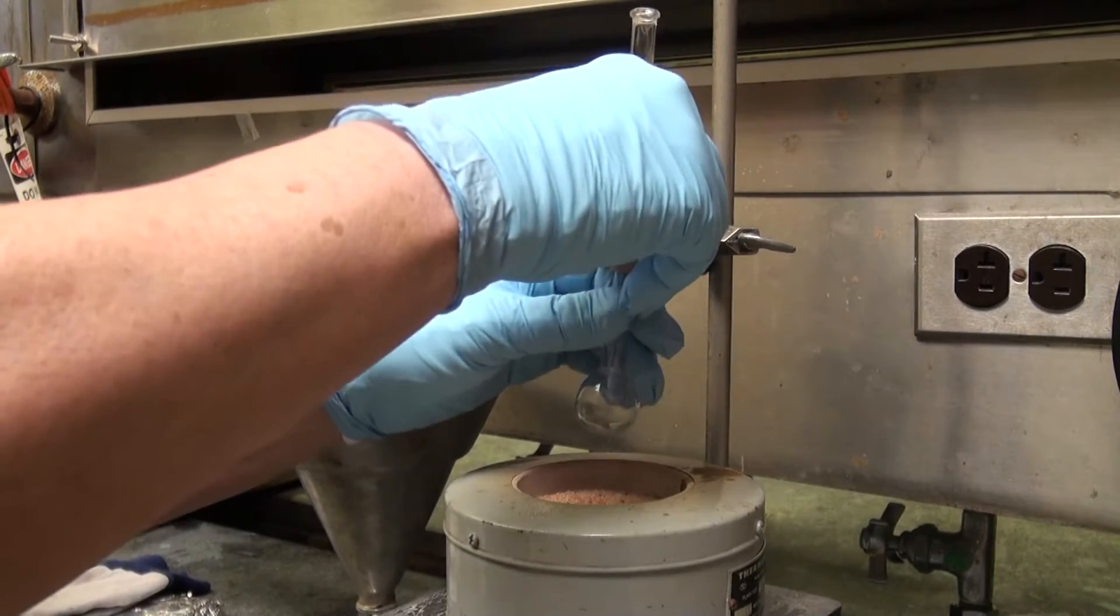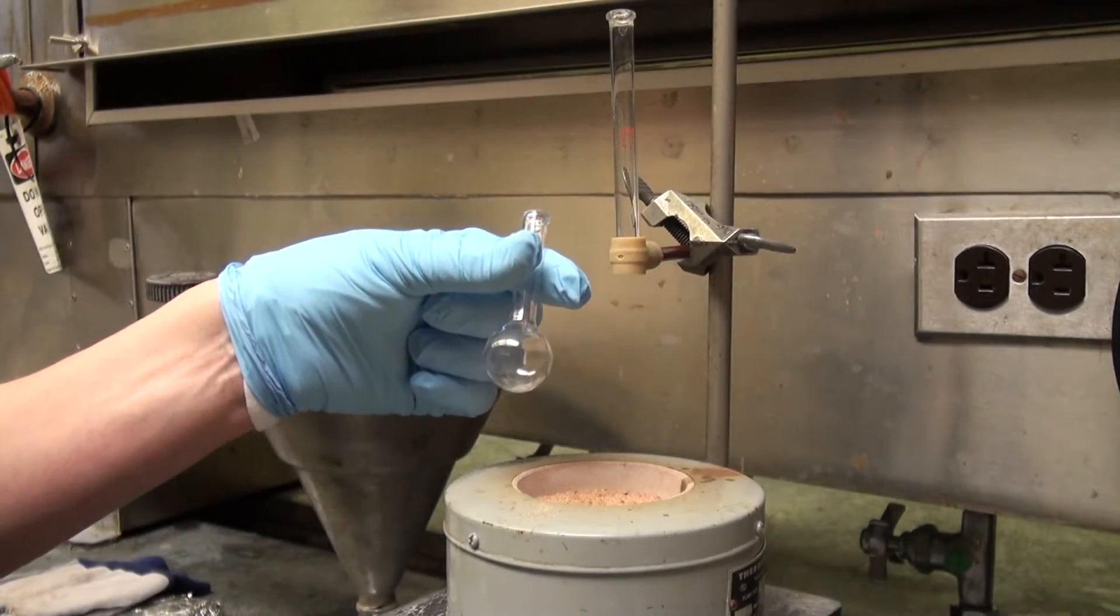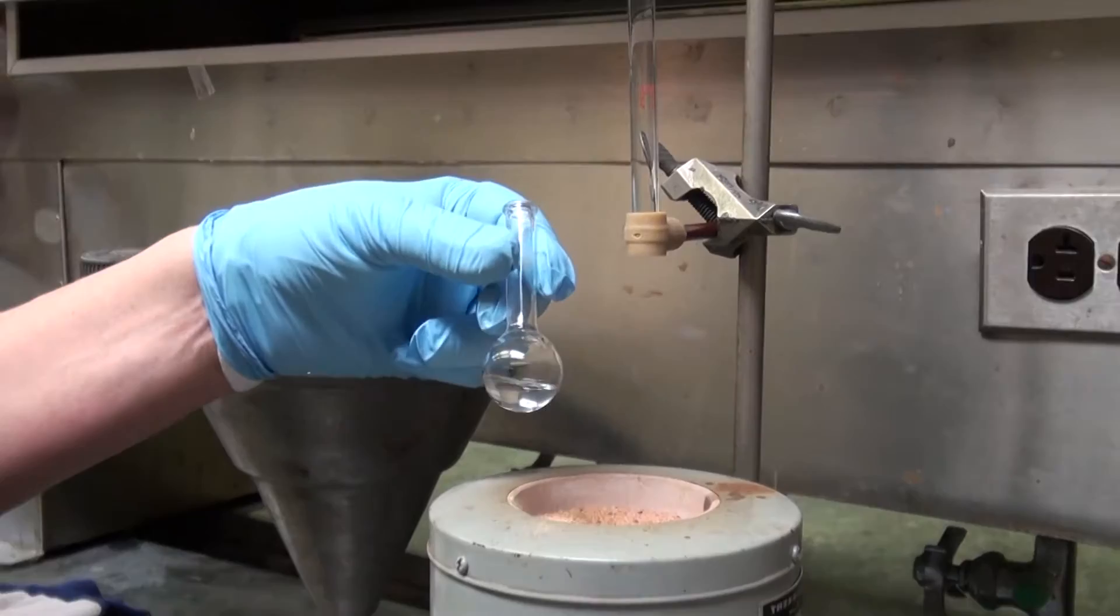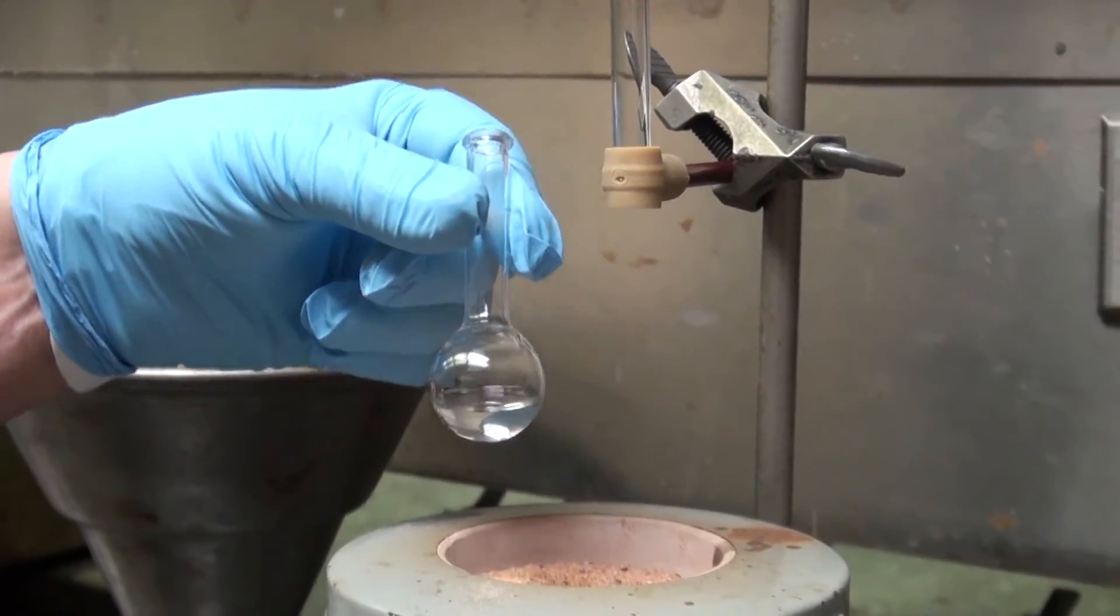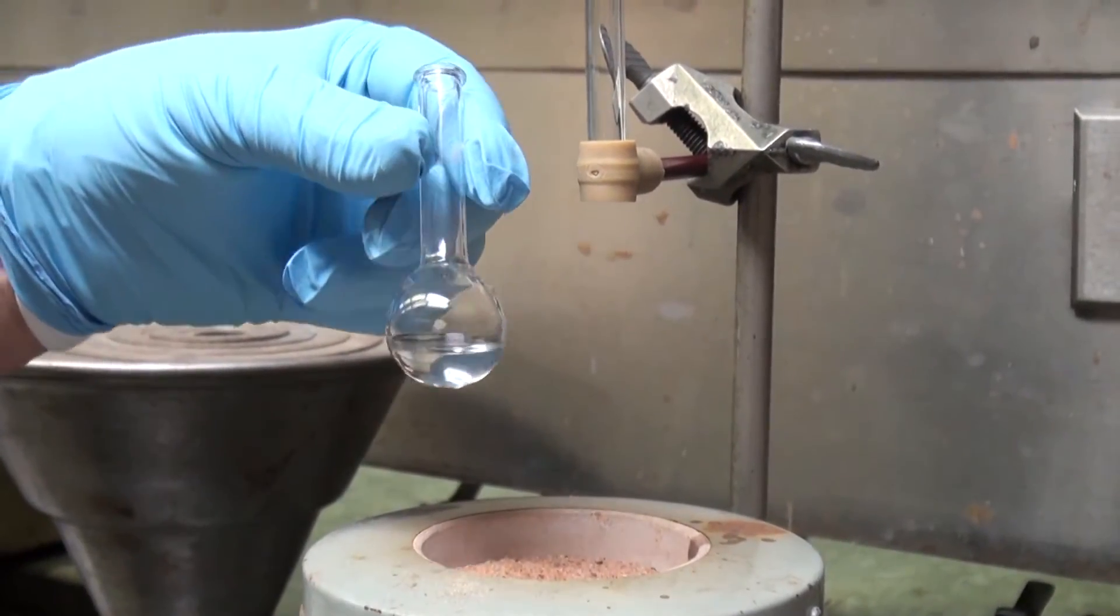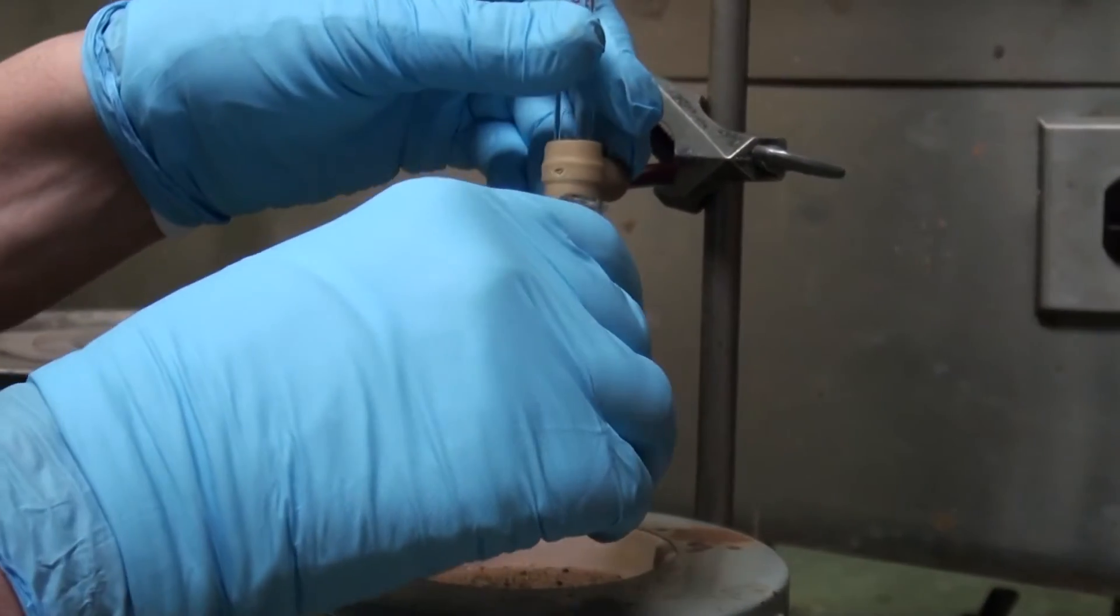So now we are going to add this but to do so I have to remove the flask. So now there is the reaction mixture and two boiling chips in this flask. So you can attach it,